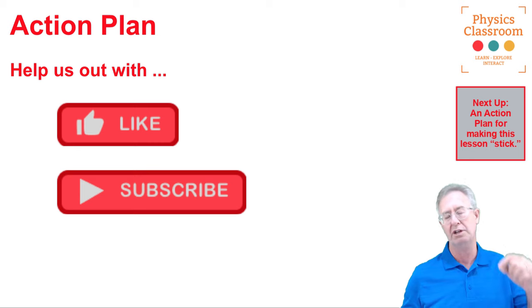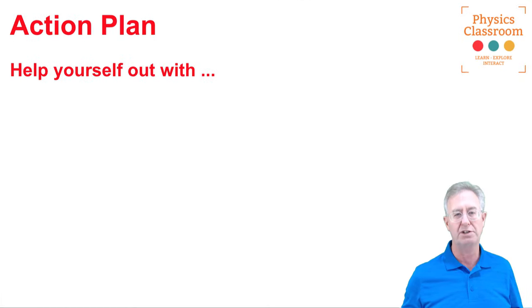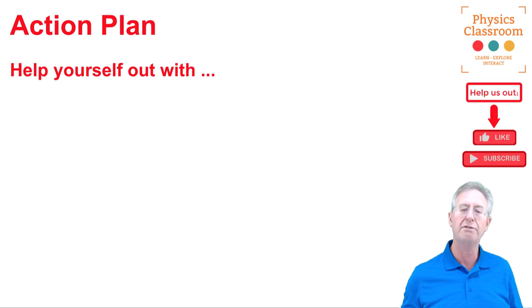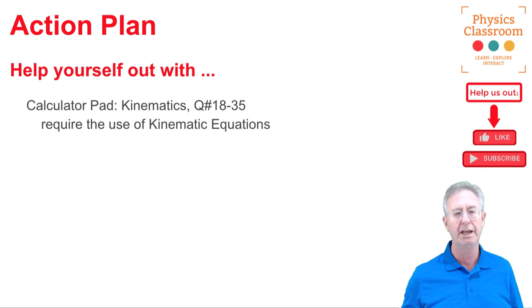Okay, now for the action plan. Here's what I'd like to suggest you do. First of all, if you head off to our website, there's a section there called the calculator pad. It's just perfect if you're trying to learn how to use math formulas. In the calculator pad, you want to look for the chapter titled, 1D Kinematics. And when you find it, look for questions number 18 through 35. Each one of those questions demand the use of a kinematic equation to solve for an unknown. Well, what you're going to find are the questions, the answers, and then an audio-guided help file that will kind of guide you through how to solve for the unknown.